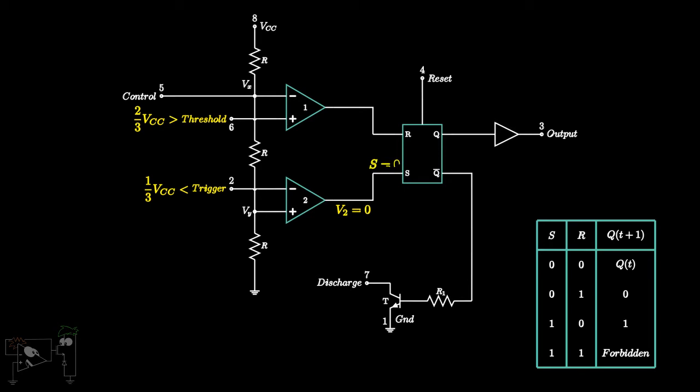Similarly, the output of comparator 1 will be low, meaning input R will be low. Hence, the RS flip-flop will retain its state.